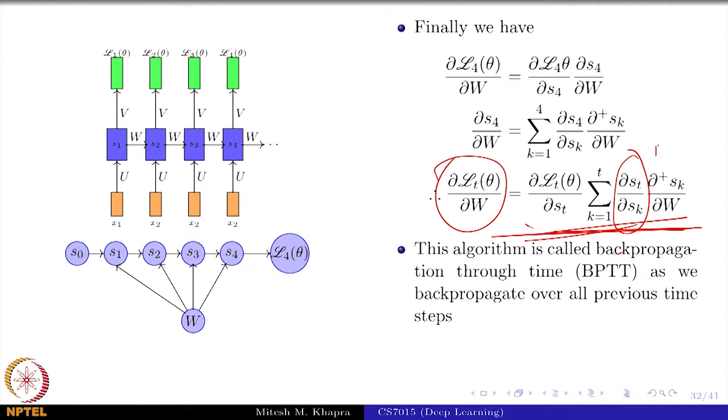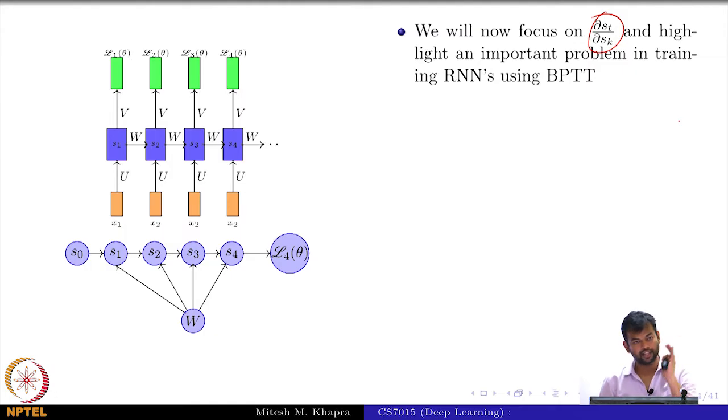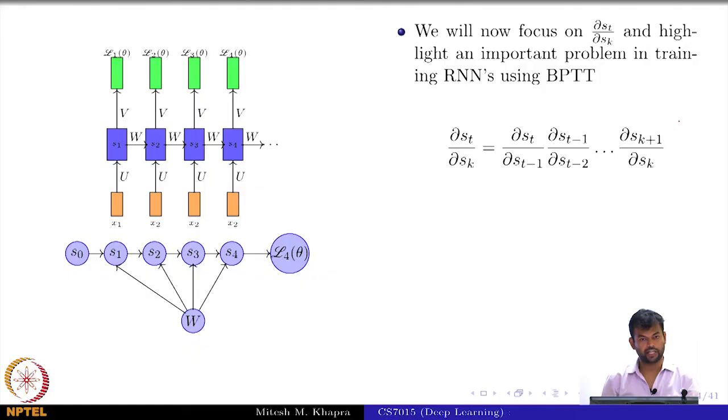Where s_t could be the last time step and s_k could also be the first time step because you are summing over all the time steps. So, you could have a term which is s_t capital T which is the last time step, the first time step and the derivative of the last time step with respect to the first time step. That is the situation that we are dealing with. We will consider one such generic element which is ∂s_t/∂s_k and we will just try to expand it.